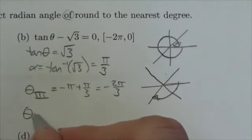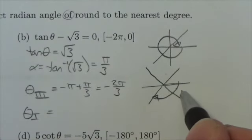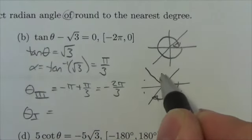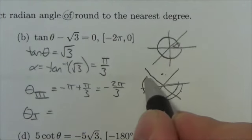To get to the first quadrant, still going in the negative direction, I need 1, 2, 3, 4, 5 of those thirds to go all the way around.